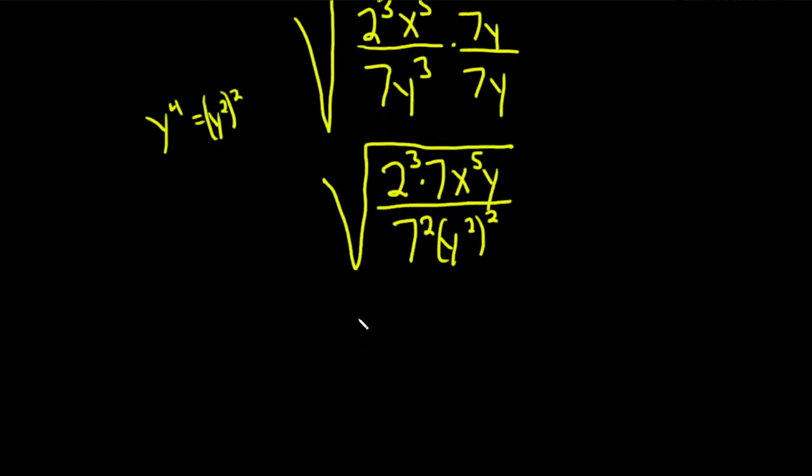So this becomes the square root of... Let's go ahead and start cleaning the numerator up. So in the numerator we want to keep all the squared pieces. So 2 cubed will be 2 squared. I'll borrow 2 squared from that.